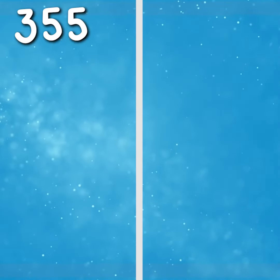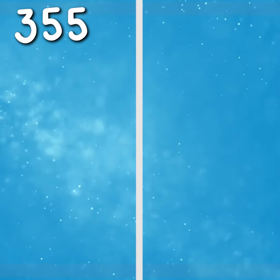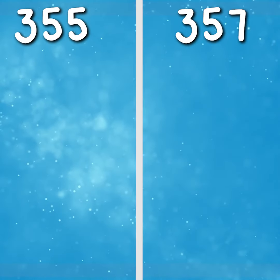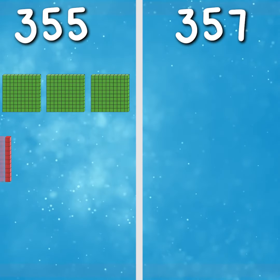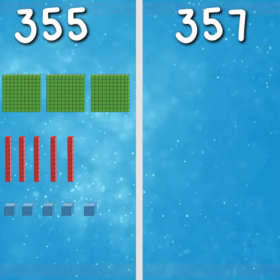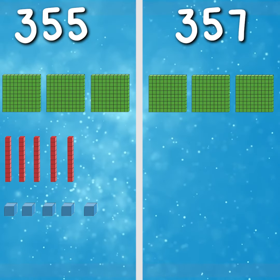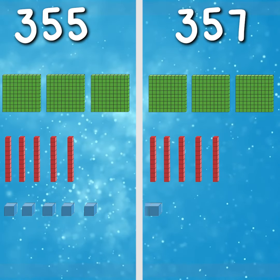Let's look at one more example, but instead of using a place value chart, we're going to compare the numbers using base 10. Here are the numbers 355 and 357. 355 has three hundreds, five tens, and five ones. 357 has three hundreds, five tens, and seven ones.